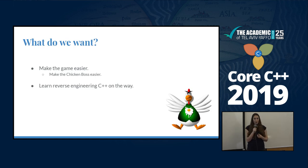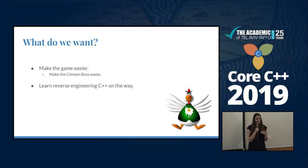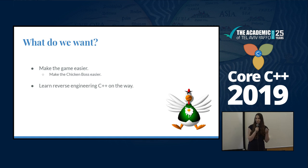What do we want? We want to win the game in general, but specifically we want to make the chicken boss easier to win — it will have fewer members and things that make it easier. We also have the space sheep that we might want to change and make stronger. And we also want to learn reverse engineering of C++ binaries — this is the main goal.